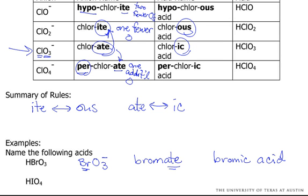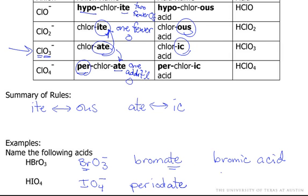HIO₄. The anion is IO₄⁻ — you're already ahead of me, you know it has the 'per'. The root is 'iodo', but I need to make this an 'ate', so I'll drop the O to avoid double vowels. It's going to be periodate. Now I replace the 'ate' with '-ic', so it's periodic acid.